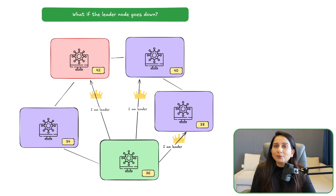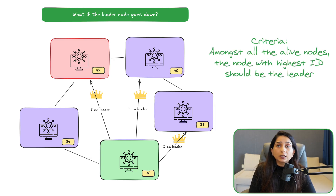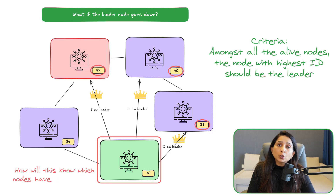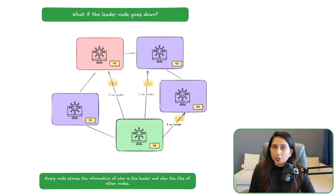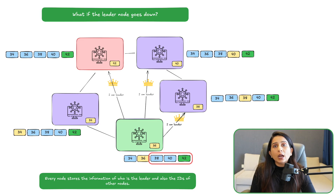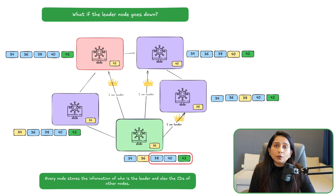Let's say node 36 realizes it has stopped getting heartbeats and wants to start a new election. In the Bully Algorithm, the node with the highest ID among alive nodes becomes the leader. Every node checks what other nodes in the system have higher IDs than itself. Each node stores information about who the current leader is and what other nodes exist, including their IDs. Node 36 finds all nodes with higher IDs than 36 and sends a message only to those nodes saying it wants to be the leader.